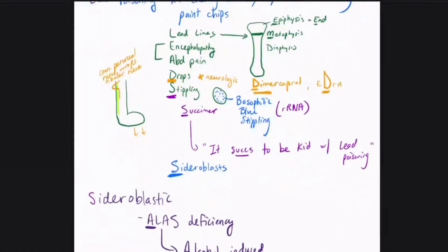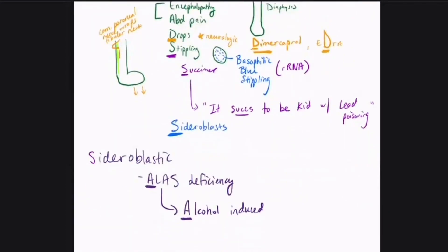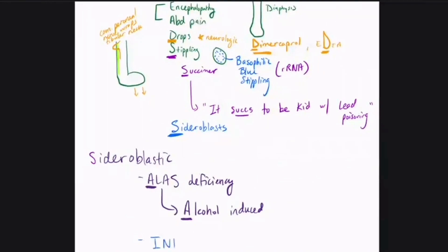So the next way that I want to mention you can get sideroblastic anemia is from something called isoniazid. So INH is isoniazid's abbreviation. What is isoniazid? This is the I in RIPE therapy. So if you remember your tuberculosis treatments,